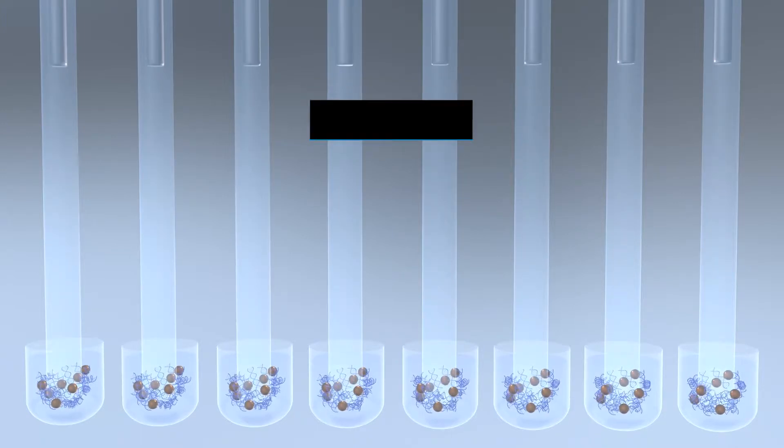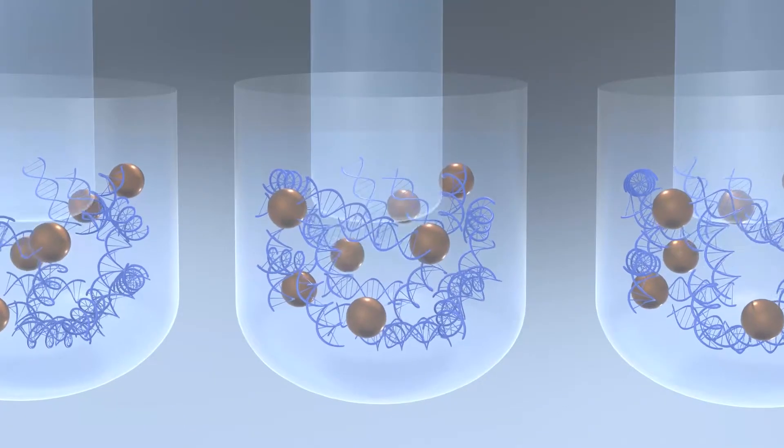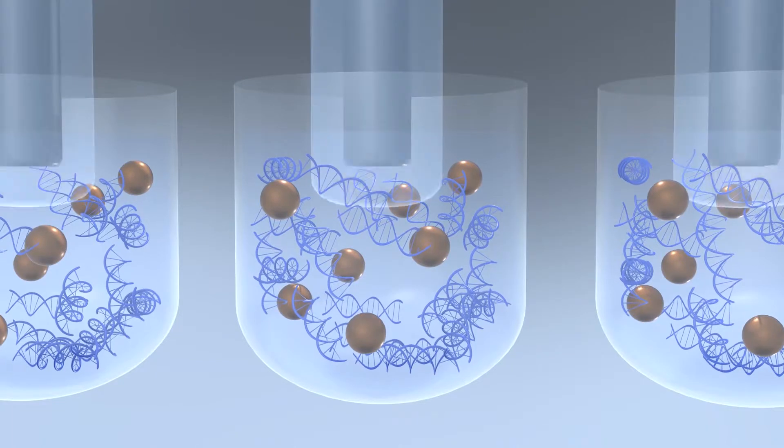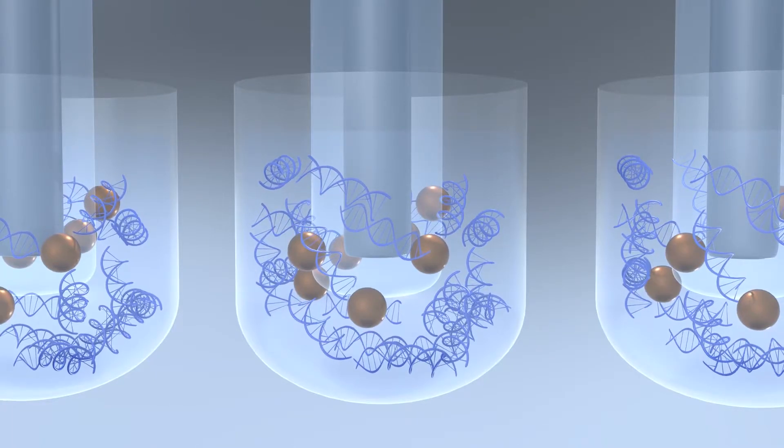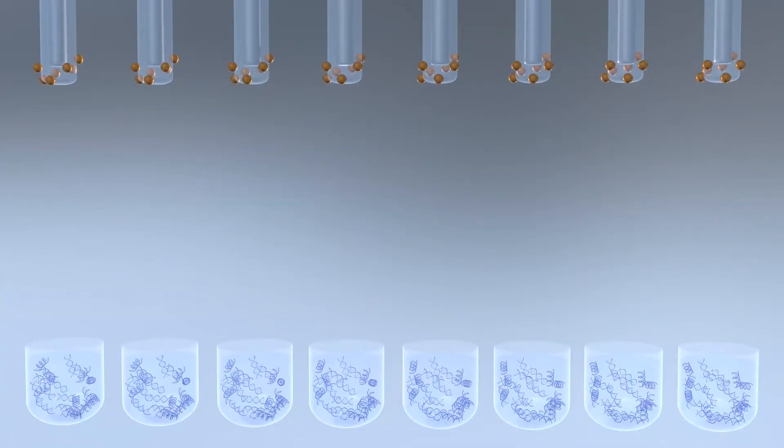The final elution step separates the nucleic acids from the magnetic beads. The eluate contains the nucleic acids ready for downstream analysis.